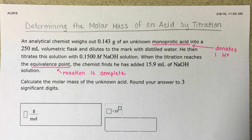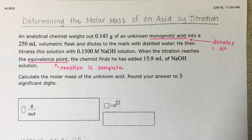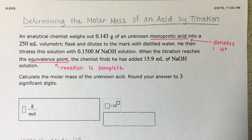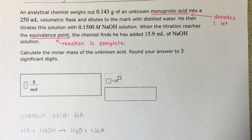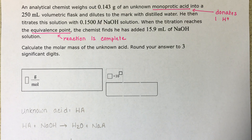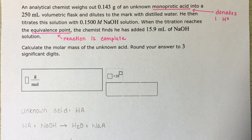This is a problem that looks like nothing we've ever done in class, but it's totally something you can do. It just uses stoichiometry and molarity calculations. With all stoichiometry problems, the first thing you need to do is write out a balanced equation, which is a little bit tricky here because we don't know the formula of the acid — it's unknown.